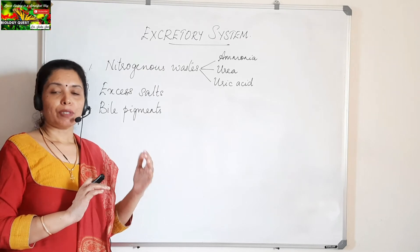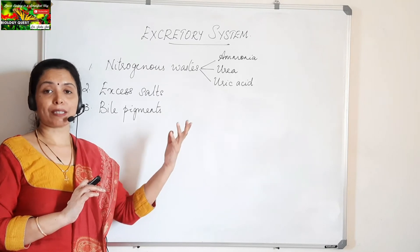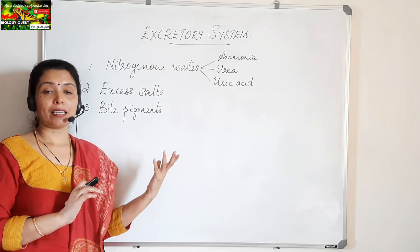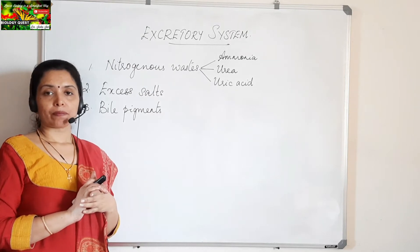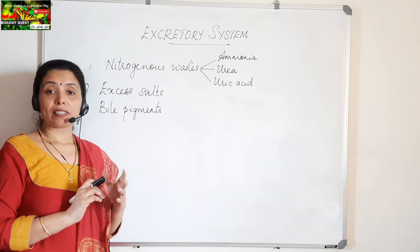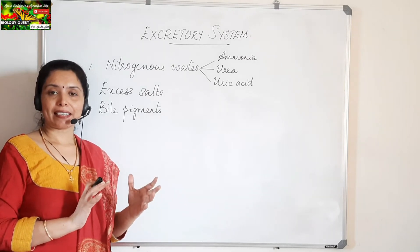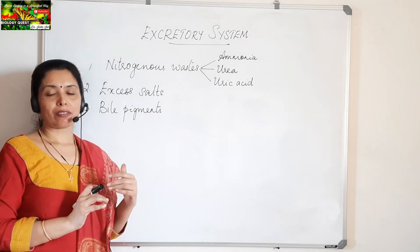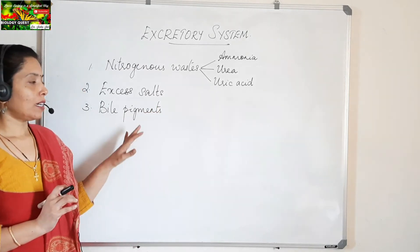This bile, which is produced in the liver as the breakdown product of the hemoglobin of the RBCs, is brought into the digestive system through the common bile duct and passed into the duodenum part of the small intestine. It is the presence of these bile pigments that gives the characteristic color to the feces. Feces is the undigested food material, and its characteristic color is due to the presence of bile pigments.